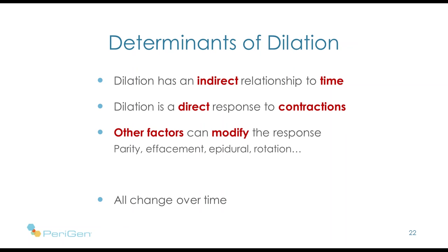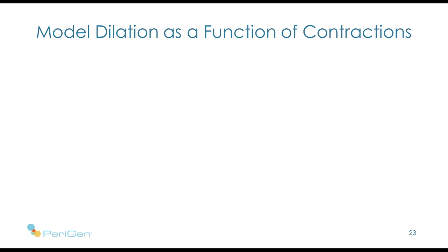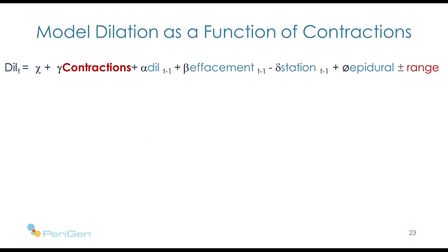What happens if we consider those real, highly influential factors? A number of years ago, we applied this scientific method to developing models for the problem of labour. To make a long story short, we came up with a formula. The dilation a patient is at right now is related to her contractions — are they frequent or infrequent? It is related to her previous dilation, her effacement, her station at the previous exam, whether she has an epidural, and there was a range. With a formula like this, at any point in time you can put all the numbers in and calculate an expected dilation.